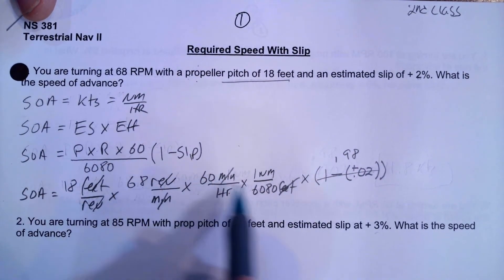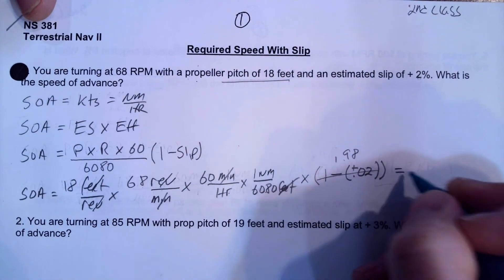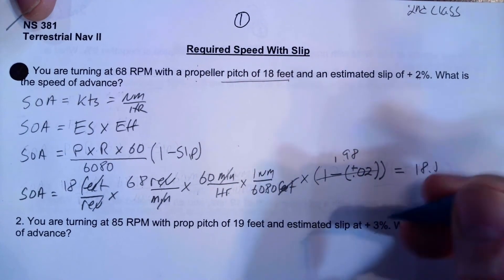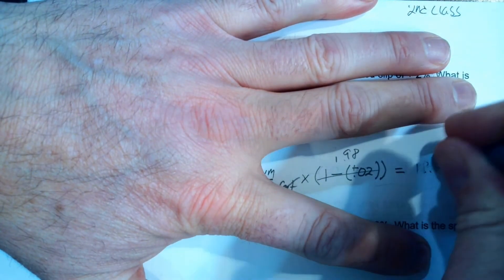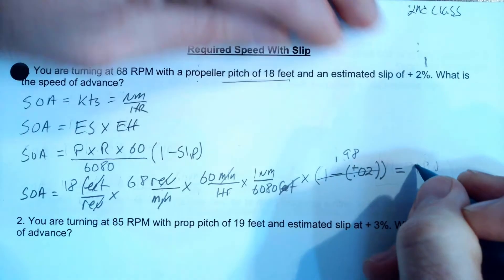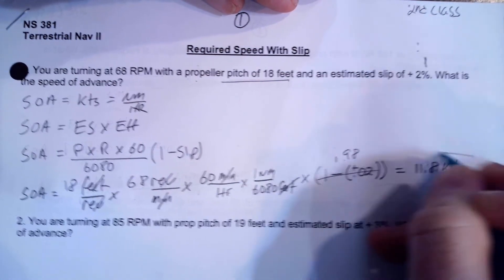So 18 times 68 times 60 divided by 6,080 times 0.98. And when I do all that, you should get 18 point, excuse me, 11.8 knots. Alright, so the answer should be 11.8 nautical miles per hour, which is knots, and that's the answer.